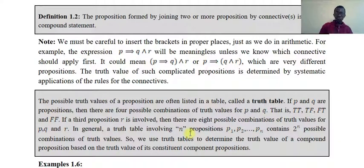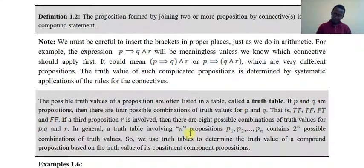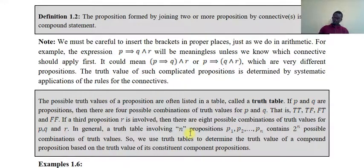If there are three propositions, there are eight possible combinations of the truth values for p, q, and r. In general, the number of possible combinations follows a formula.